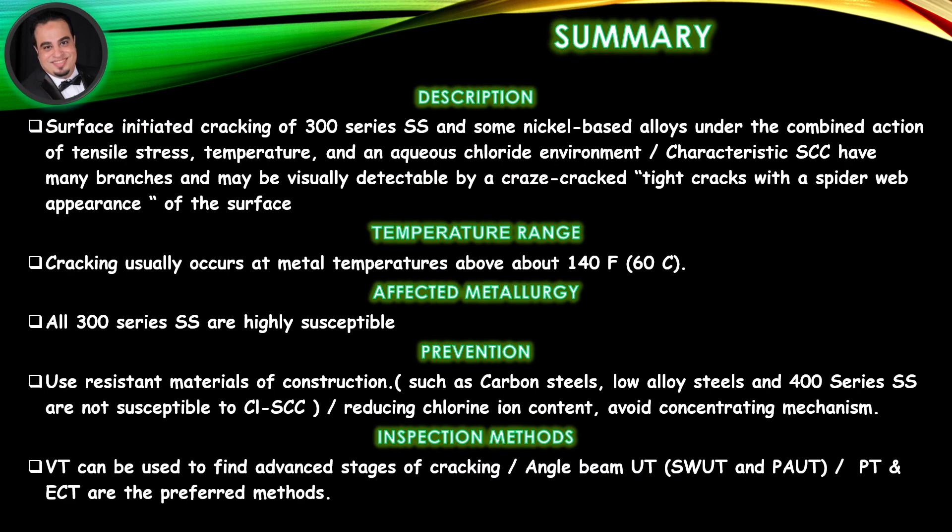Summary — Description: Surface initiated cracking of 300 series stainless steel and some nickel-based alloys under the combined action of tensile stress, temperature, and an aqueous chloride environment. Characteristic stress corrosion cracks have many branches and may be visually detectable as tight cracks with a spider web appearance on the surface. Cracking usually occurs at metal temperatures above about 140°F.